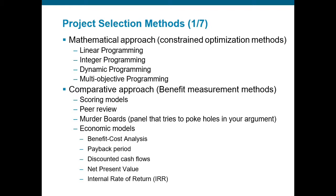A scoring model could include some type of a scorecard. A scorecard is where we evaluate multiple criteria with weighted scores based upon how we prioritize those objectives. For example, I may put a weight of 3 for schedule, a weight of 2 for cost, and a weight of 5 for quality. Then we evaluate potential projects based upon that, and whichever one has the highest relative score is the one we would select.